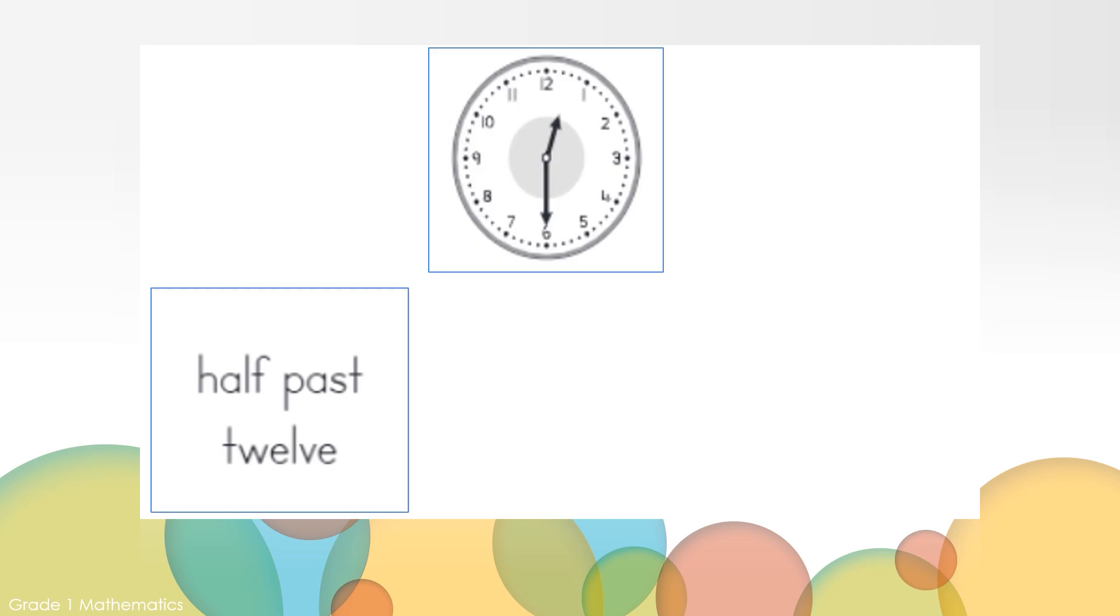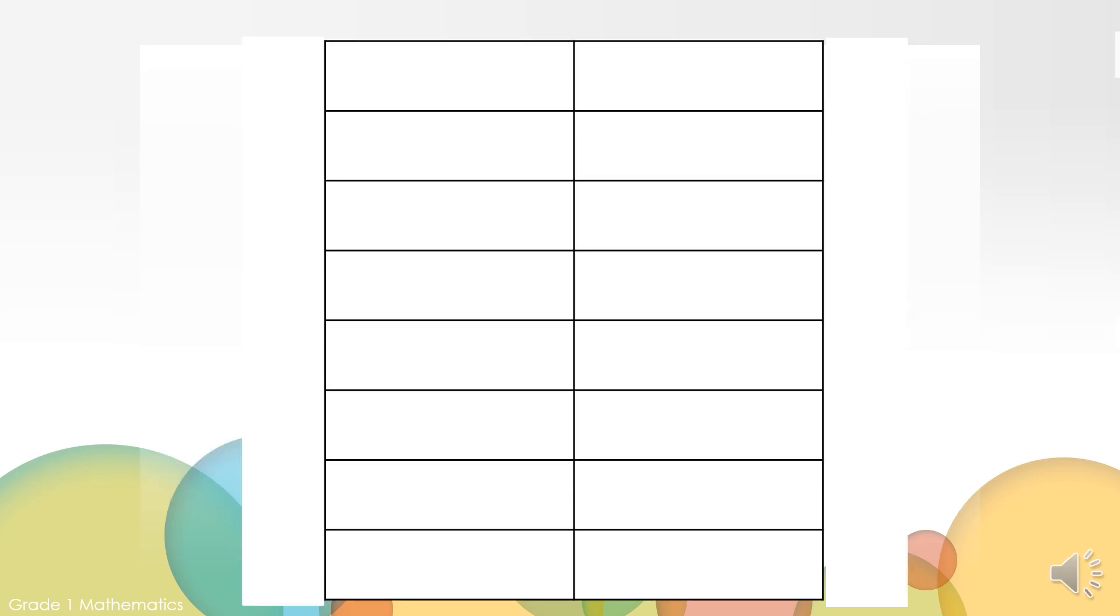We have two cards left. Let's check to see if they are a match. This card says half past 12. What time is on this clock? I see the minute hand is pointing to the 6 and the hour hand is between the 12 and the 1. What time is it? This time is 12:30. That is the same as half past 12. We made a match. That was a great game.